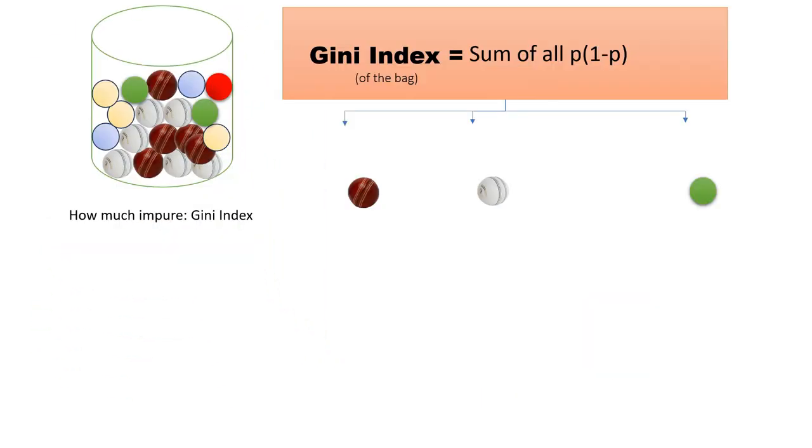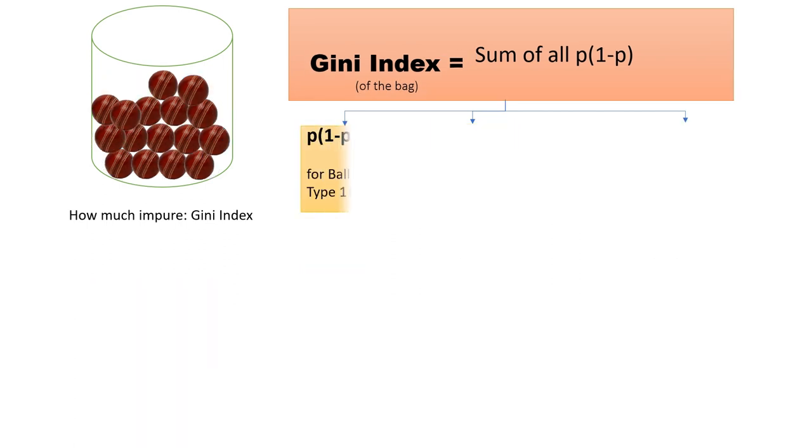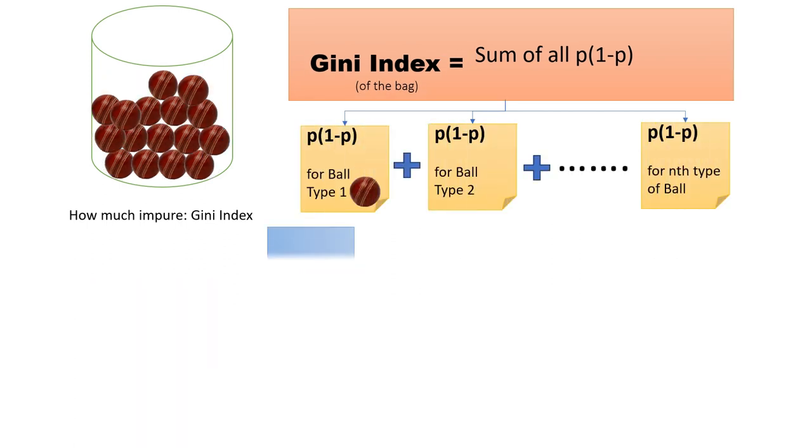Suppose there were five types of balls in this bag. We would add p(1-p) values for all five colors and then add them. In case of a pure bag, the (1-p) term will be 0 for the color present in the bag.